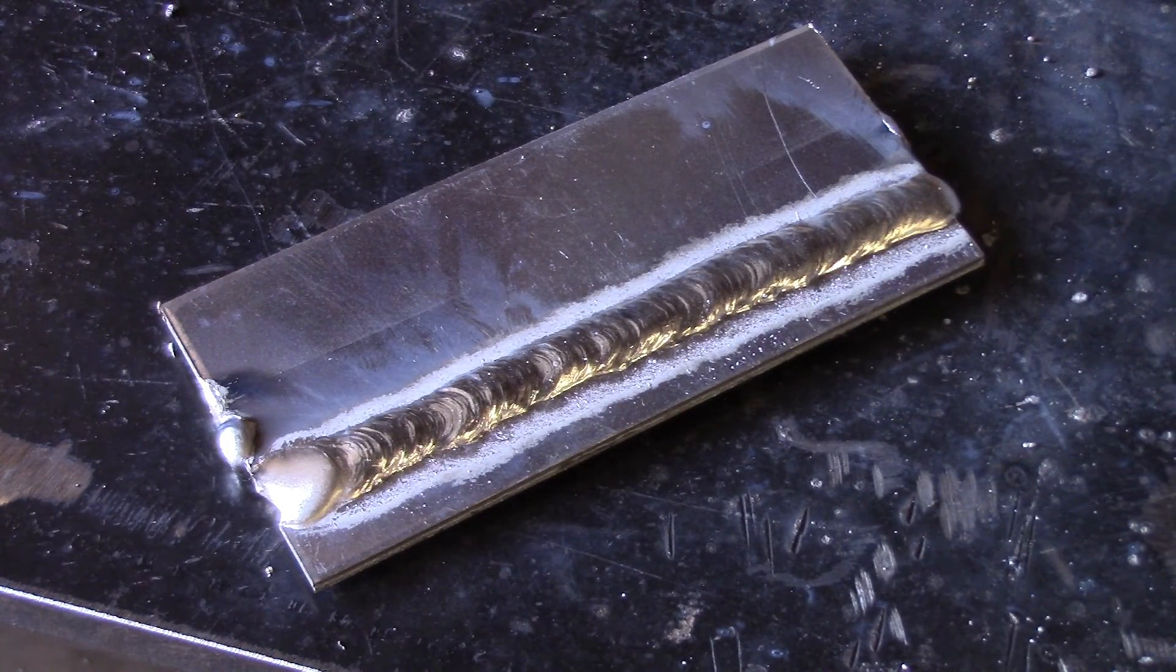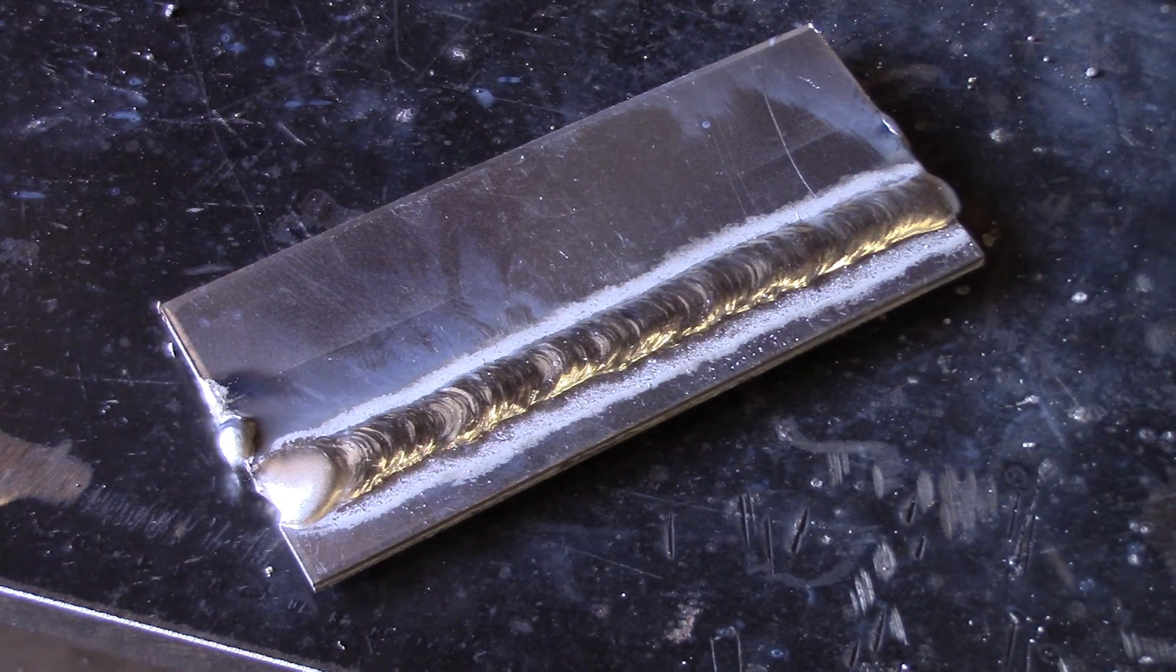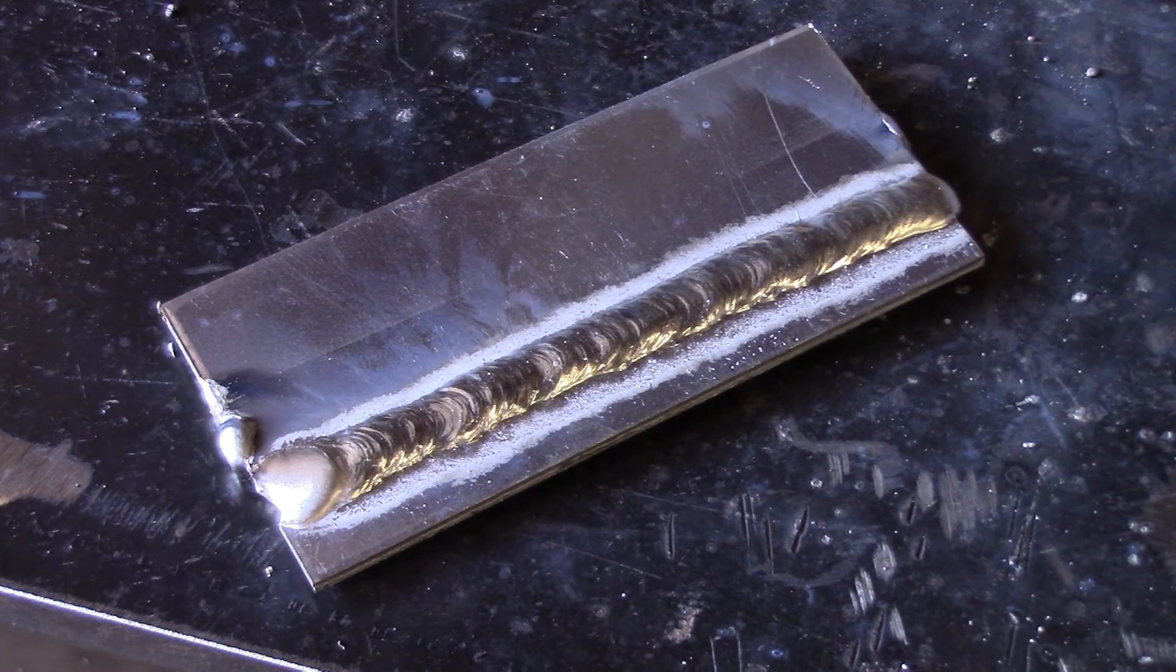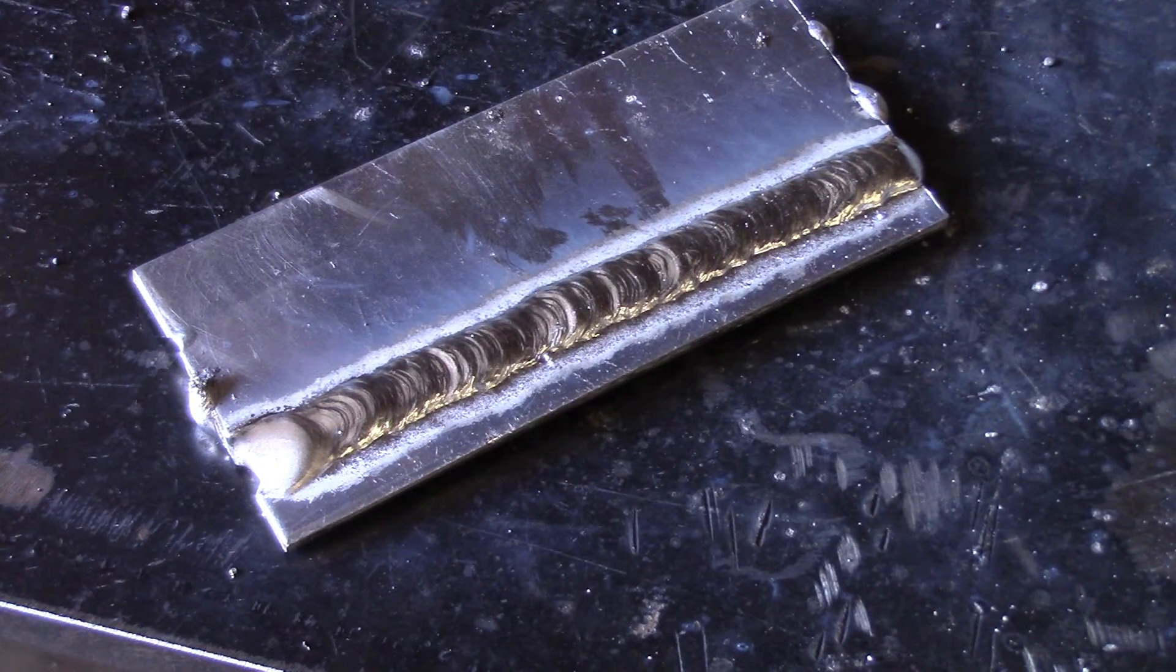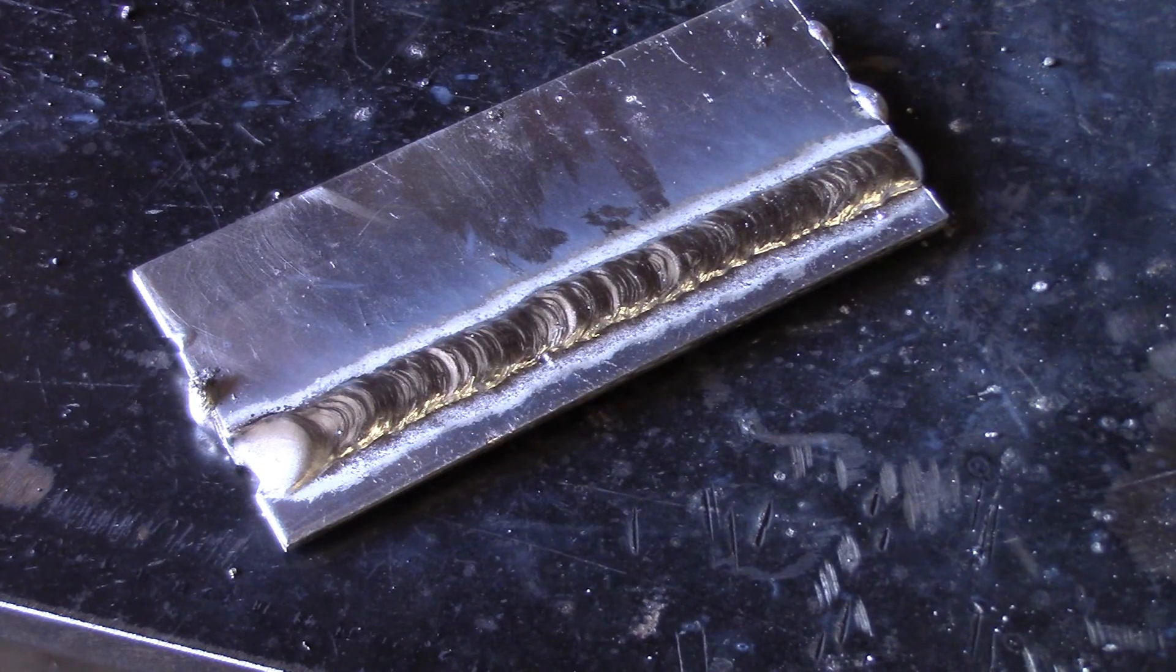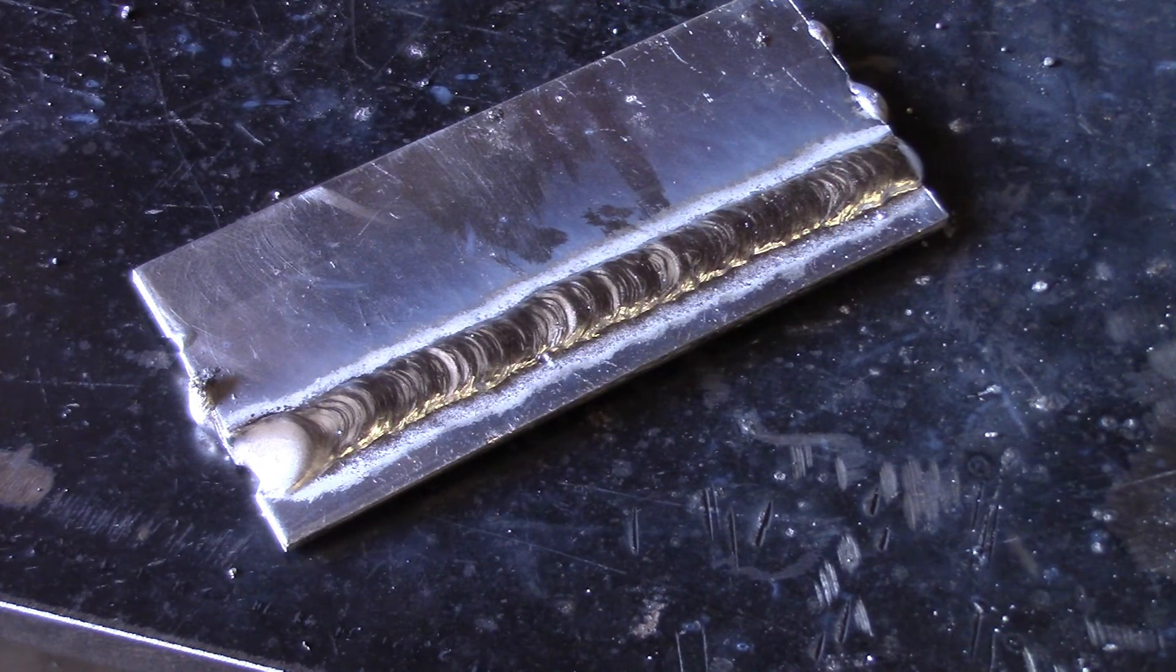This is the first lap joint that we did with the new AC Aluminum MIG Welder. I got three of them here we'll show you, so that's the first one. This is the second lap joint we did with the new AC Aluminum MIG Welder, came out pretty good. Let's take a look at the third.